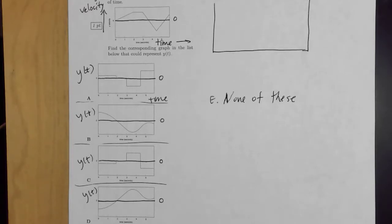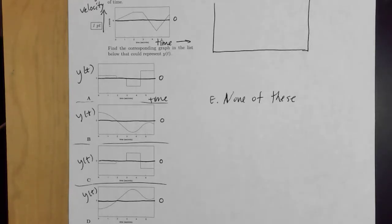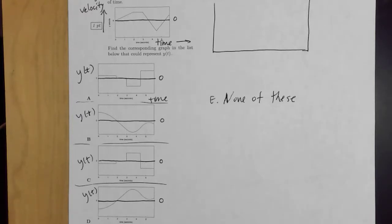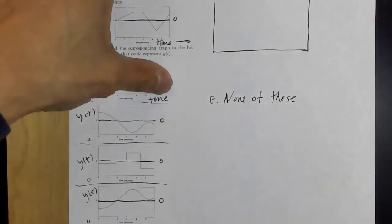One important distinction: the integral of velocity gives displacement, not position. Position and displacement are different — displacement is the change in position. Some of you may have been confused because the problem asks for position but you were thinking about displacement starting from zero.